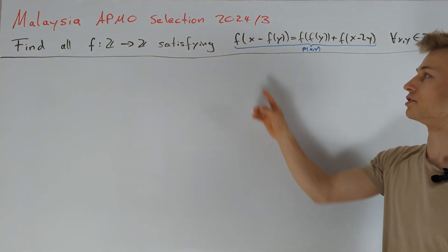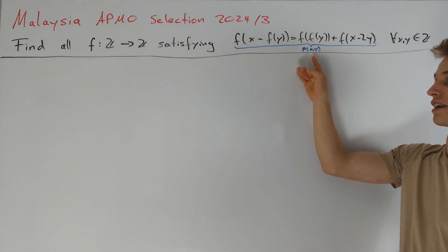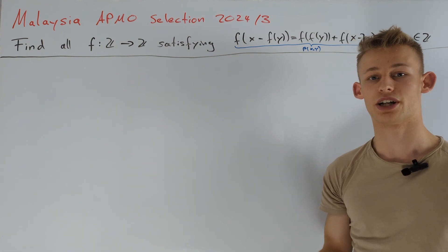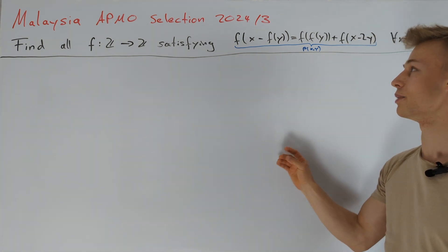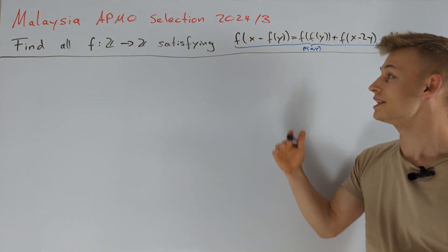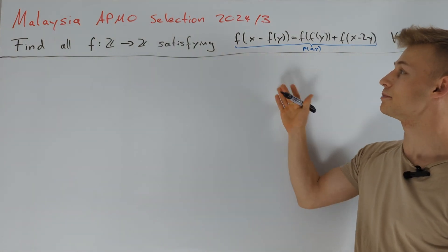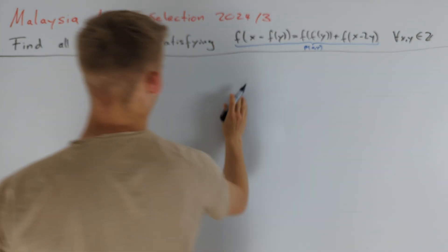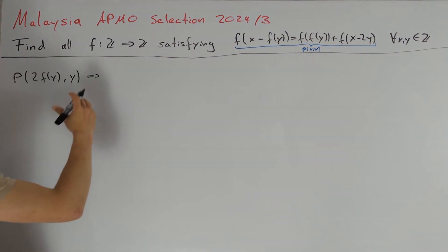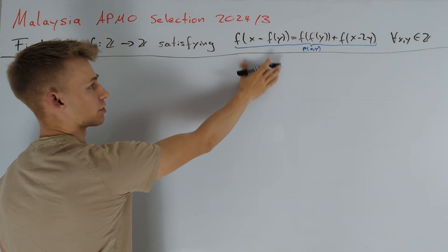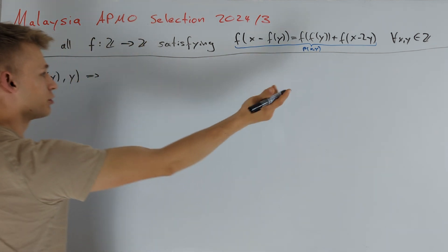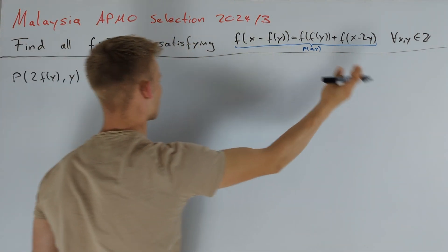Throughout the solution I want to denote this equation by P(x, y). A natural approach when dealing with functional equations is to try to plug in values for x and y such that two arguments are equal. Here this is indeed possible: if you plug in x = 2f(y), we get that f(f(y)) appears on both the left-hand side and the right-hand side, and therefore we conclude that this term here is equal to 0.